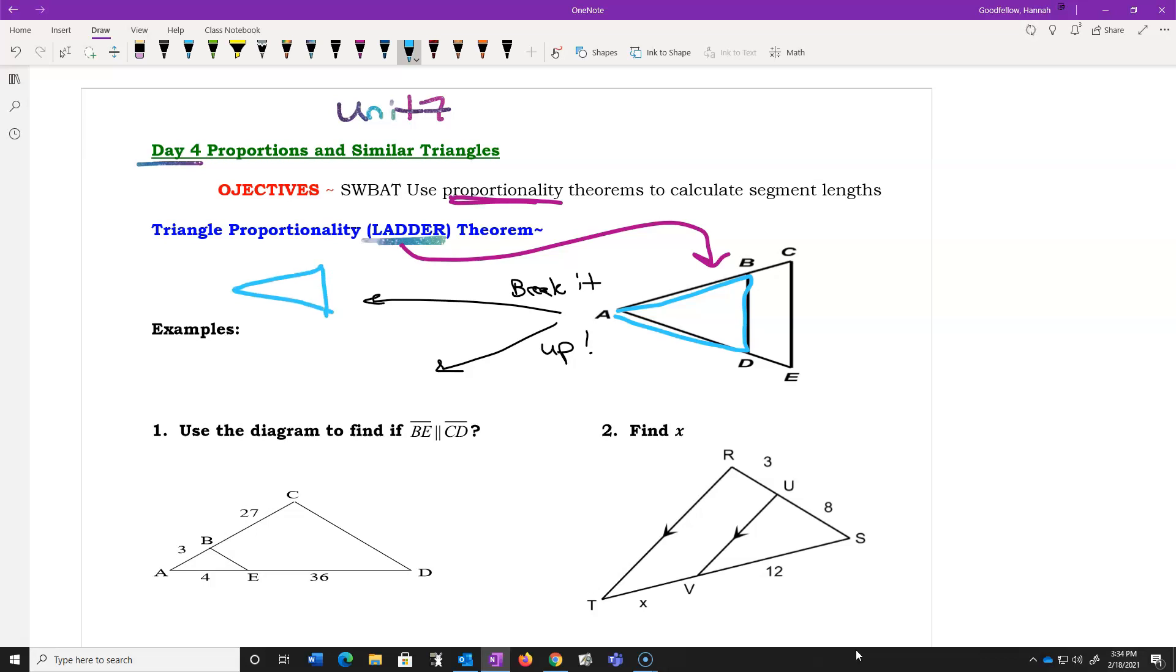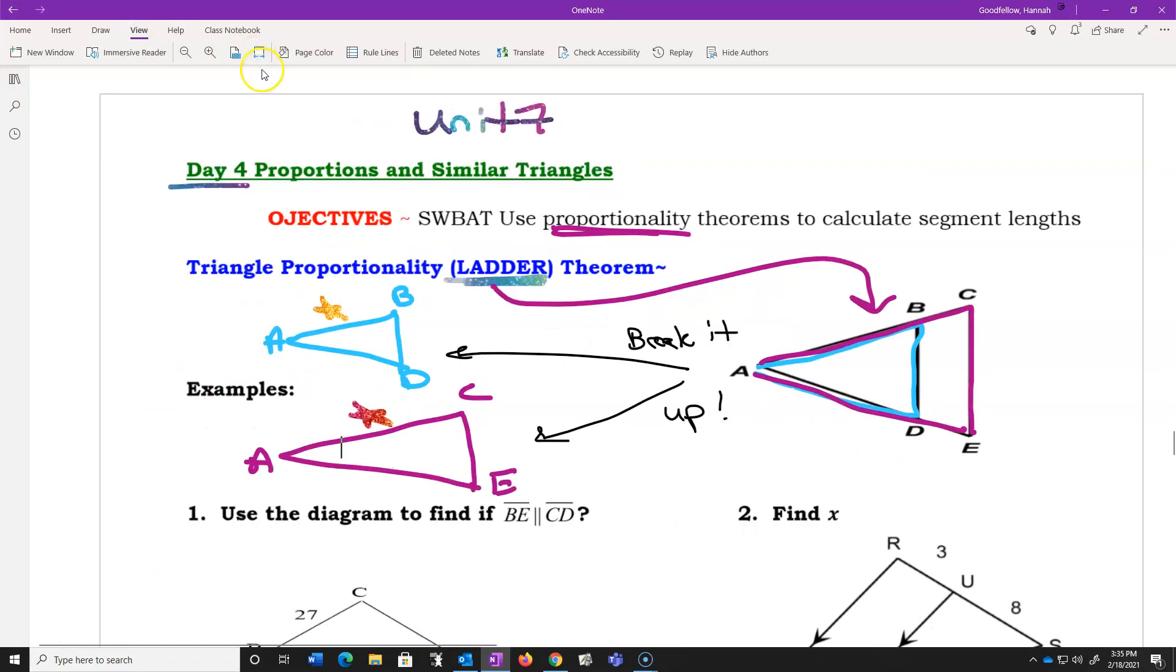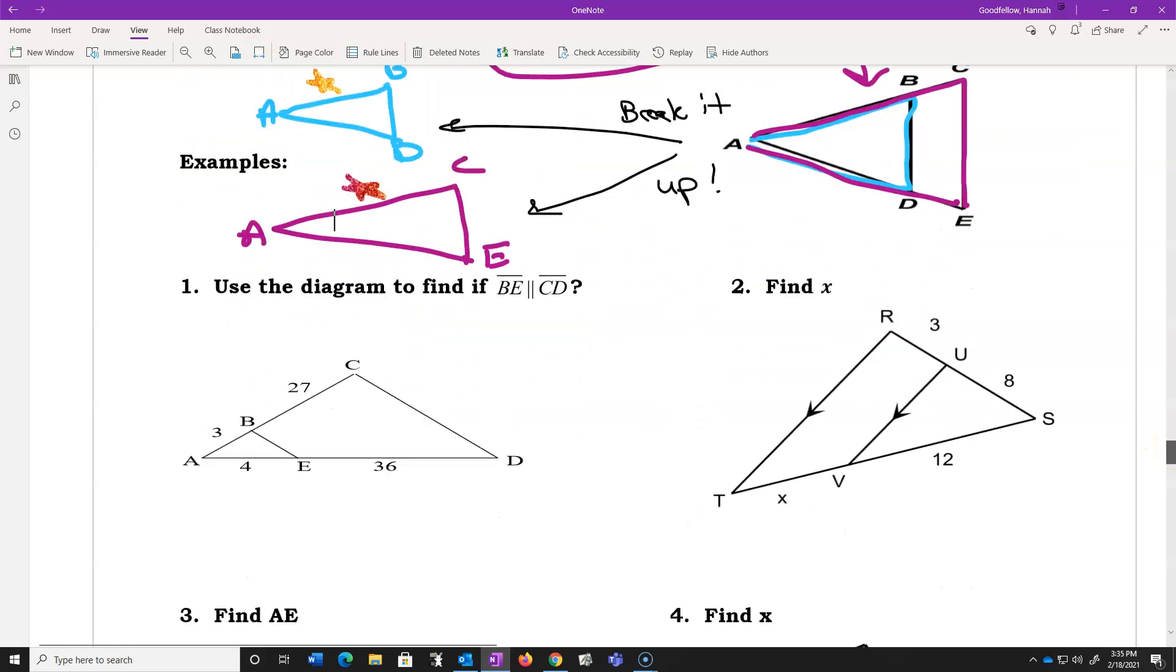Now, from many years of experience, this particular question tends to give people tons of problems because they don't follow this main rule right here, which is to break it up. You're going to break up the smaller triangle that's listed right here, and you'll ultimately see a smaller triangle. That one is going to be triangle ABD, and then you're going to see a larger triangle, which extends all the way down here to the bottom and back up, and you're going to break that into the larger triangle of A, C, and E.